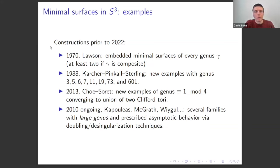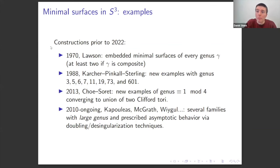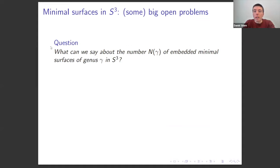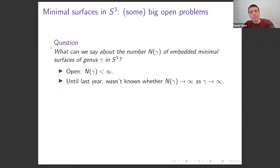In spite of these many constructions, we still don't know all that much. One broad open problem: what can we say about the number of embedded minimal surfaces in S³ of a given genus? We know genus 0 has just one, genus 1 has just one by Brendle's resolution of Lawson's conjecture. It's still open whether this number is finite, and until about a year and a half ago it wasn't even known whether this number grows to infinity as the genus goes to infinity.